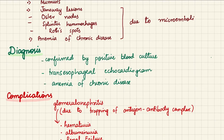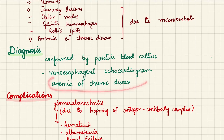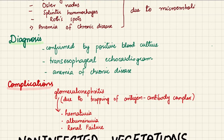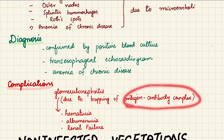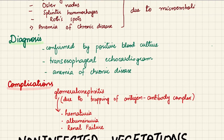In lab findings, we will find signs of anemia of chronic disease. Diagnosis of infective endocarditis is confirmed by a positive blood culture for the causative organism, or by trans-esophageal echocardiogram. Regarding complications, because it is an infectious process, the immune system reacts and antigen-antibody complexes can get trapped in the glomeruli, causing glomerulonephritis — presenting with hematuria, albuminuria, and ultimately renal failure. Glomerulonephritis is the most important complication.